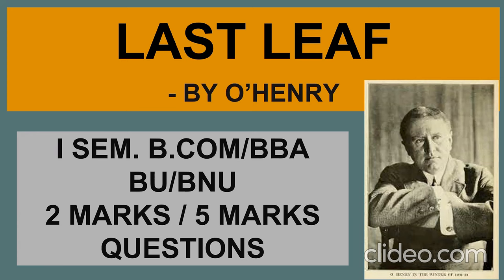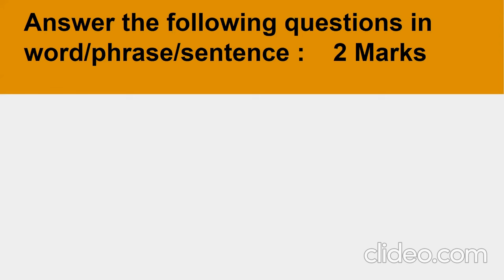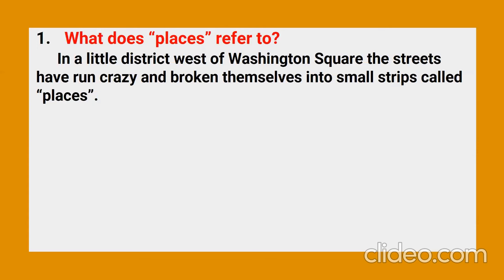The two marks questions need to be written in a word, phrase, or a sentence. These questions are taken from the textbook and a few extra questions. Question number one: What does 'places' refer to in the story 'The Last Leaf'? In a little district west of Washington Square, the streets have run crazy and broken themselves into small strips called places.